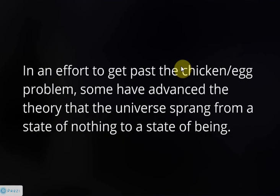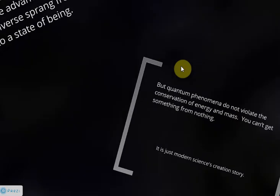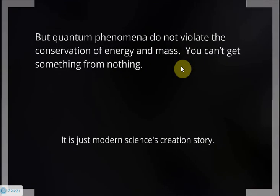Well, to give them credit, this is a realization of this chicken and the egg, dot-dot-dot problem. They're trying to say there was a state when there was nothing, and then by some process something came about. But there's still a problem with this. Quantum phenomena don't violate the conservation of energy and mass. You still can't get something from nothing. This kind of theory really is just modern science's creation story. There's no basis in natural laws that would be able to support this.